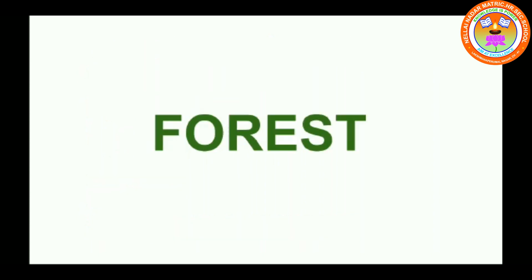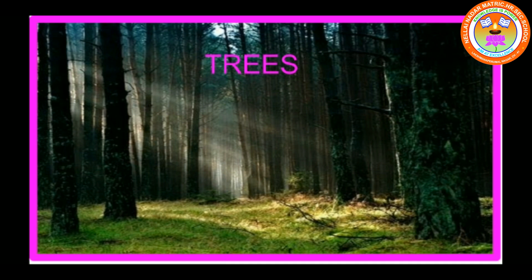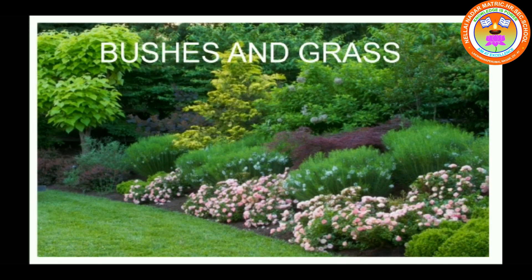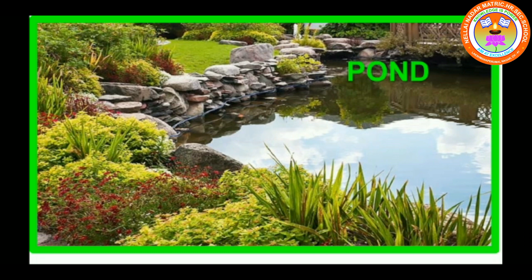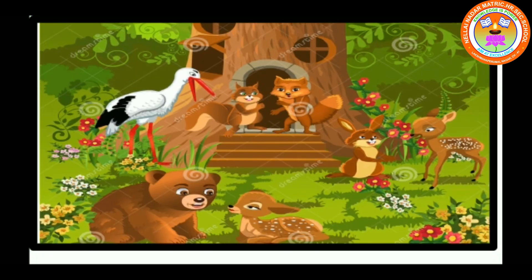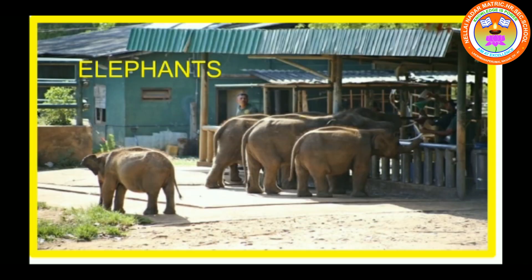Now we are going to see about forest. A forest has a large number of trees. In this picture you can see a large number of trees. The ground is covered with bushes and grass. Streams and ponds are also found in the forest.